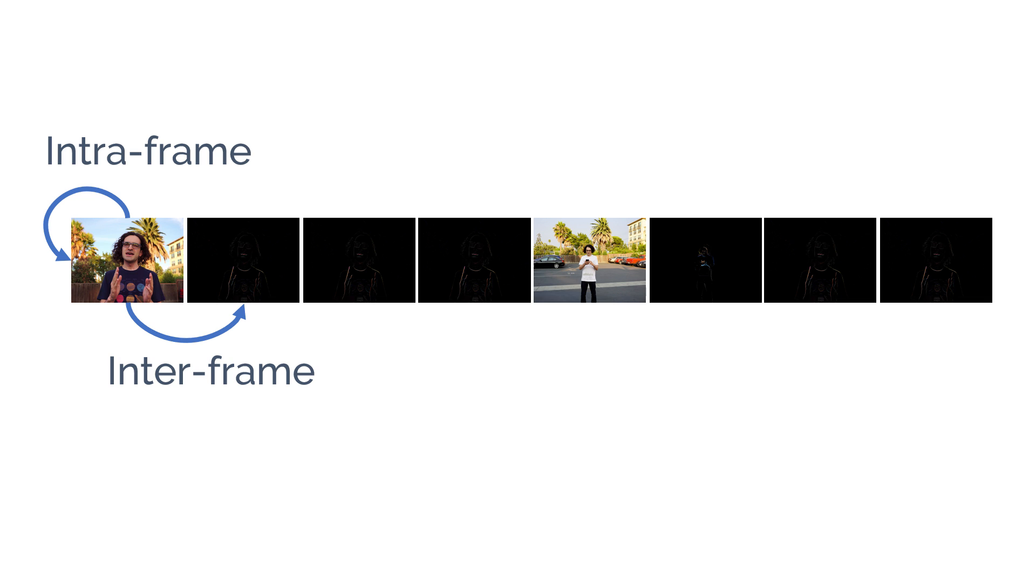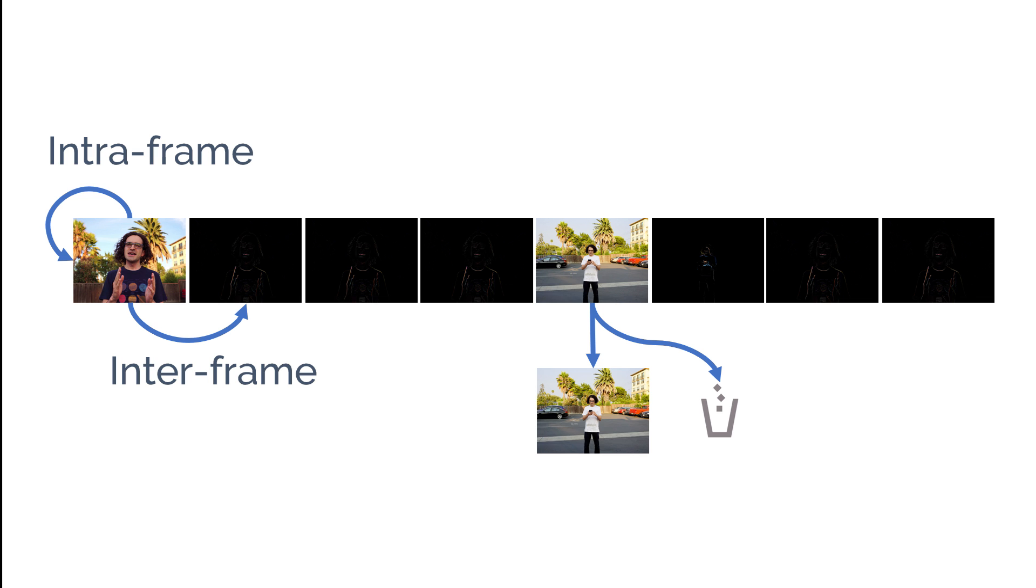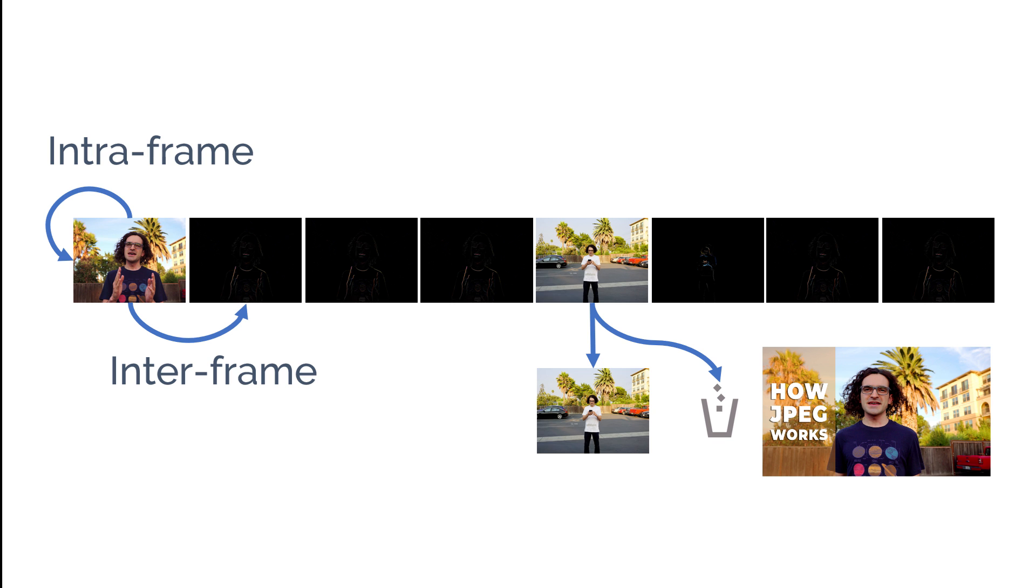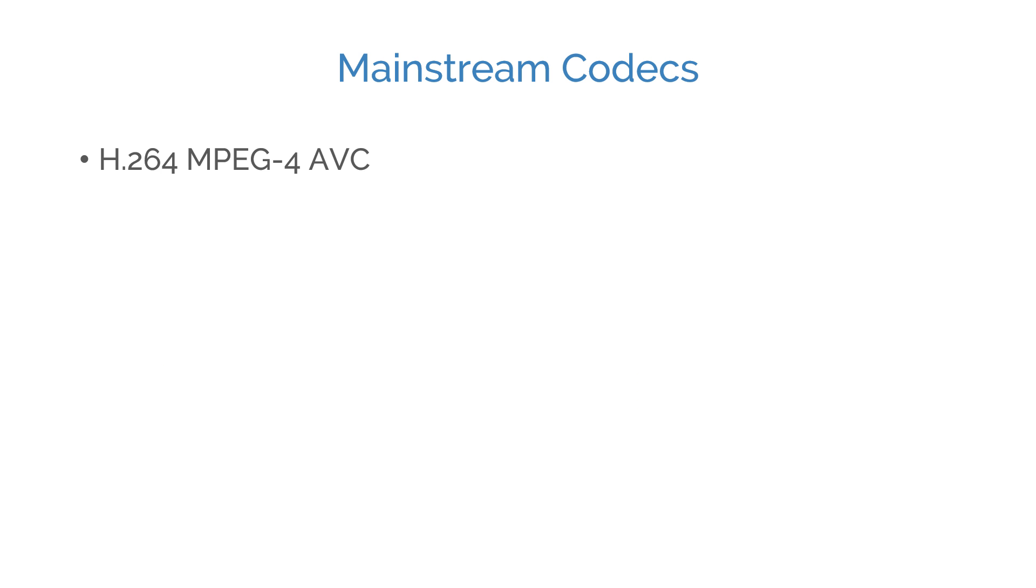Intra-frame coding, on the other hand, compresses the frame by throwing out visually redundant information within the frame and storing the rest more efficiently. Check out my previous video to learn more about how this is done. The methods I covered here are the very basics that are used by many codecs including the mainstream H.264 codec, which is also known as MPEG-4 AVC.